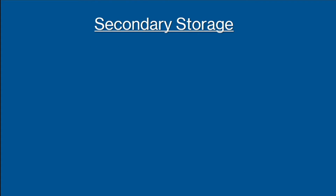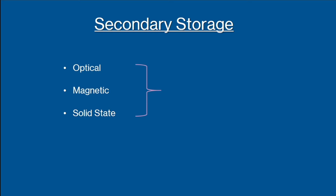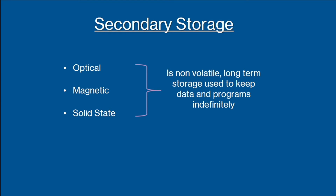Now let's take a look at secondary storage. There are three types of secondary storage that you need to know about: optical, magnetic, and solid state. A computer needs secondary storage as it's the non-volatile long-term storage used to keep data and programs indefinitely.